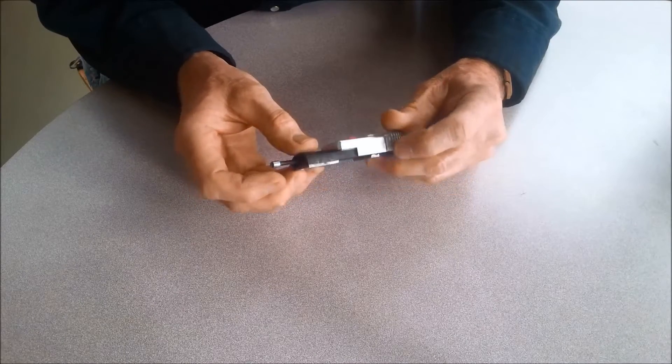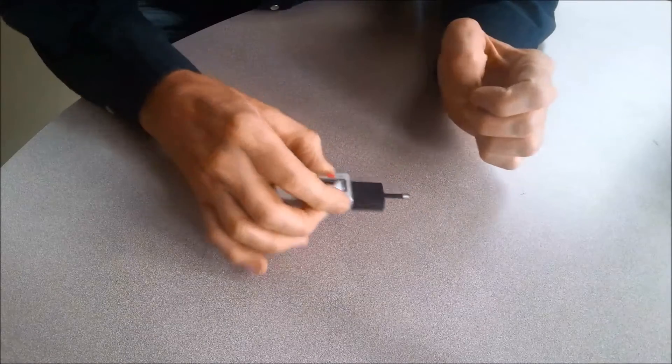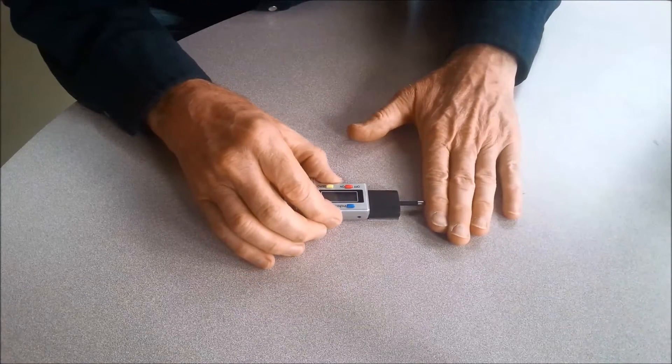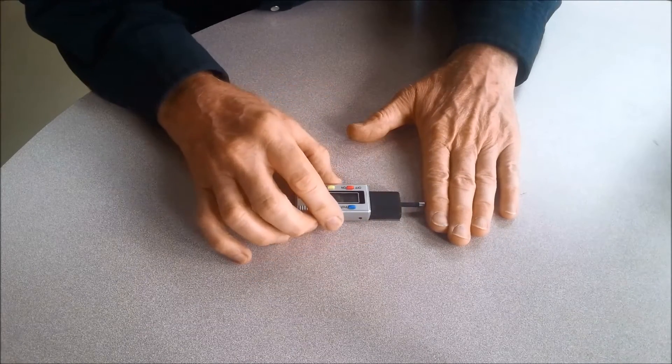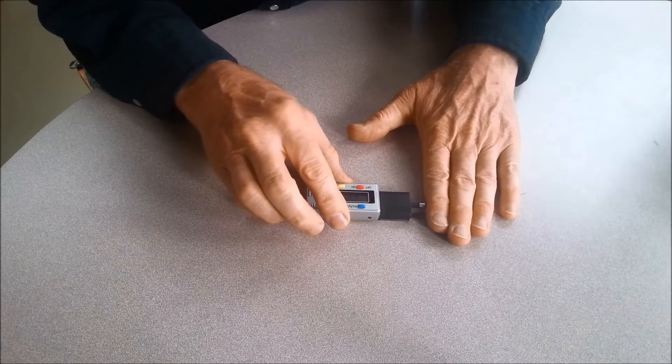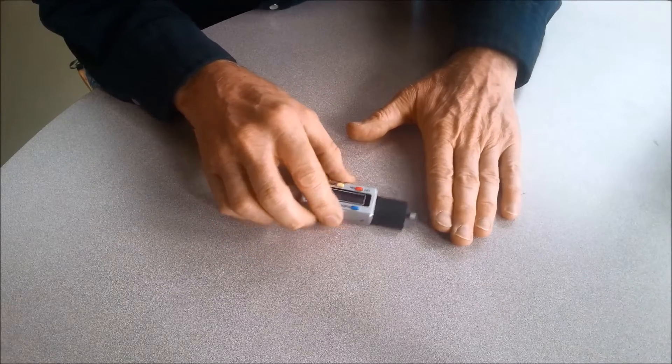You just clip it on the lathe bed and shove it up against the carriage. Then you can check digital movement whenever you move the carriage. It's great if you don't have a digital readout.